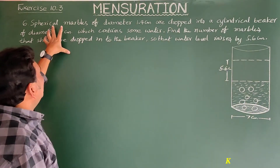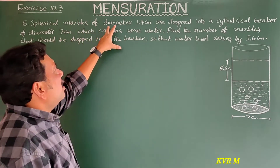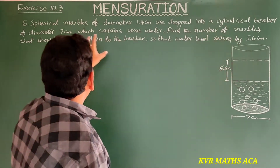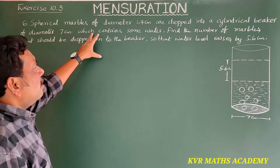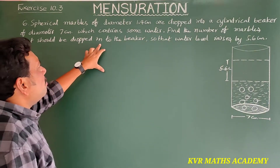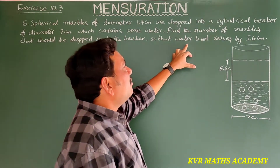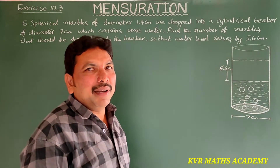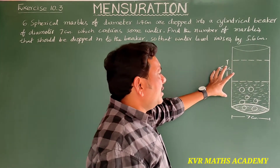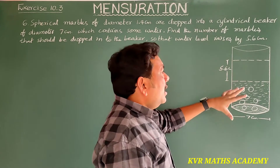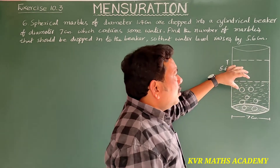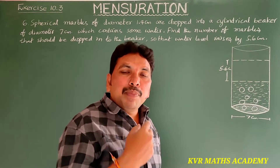Sixth question in Exercise 10.3: Spherical marbles of diameter 1.4 centimeters are dropped into a cylindrical beaker of diameter 7 centimeters which contains some water. A cylindrical beaker of diameter 7 centimeters has some water in it.